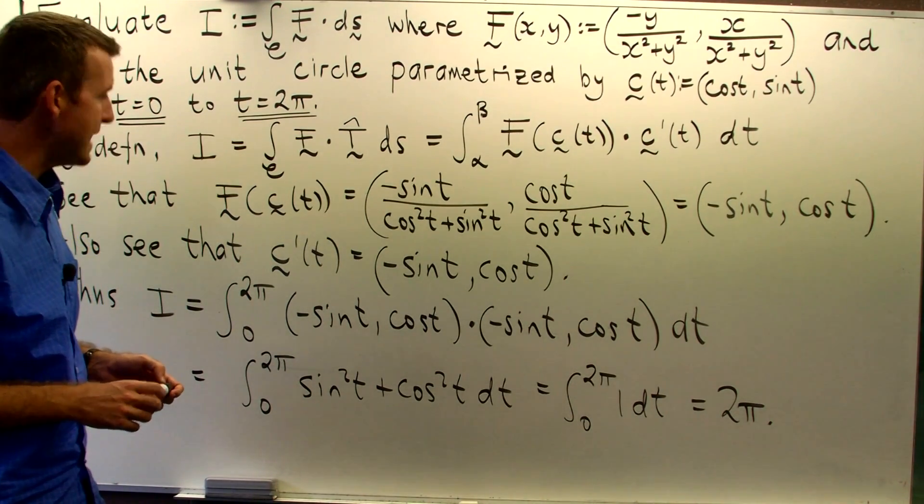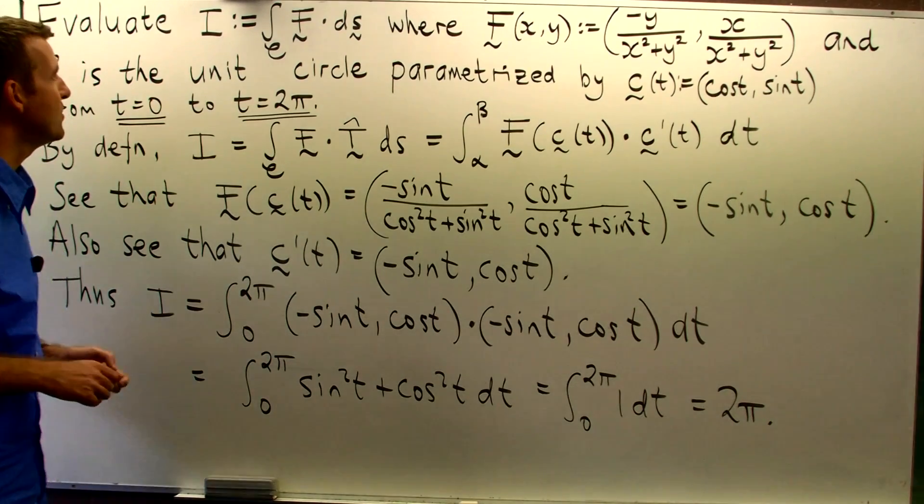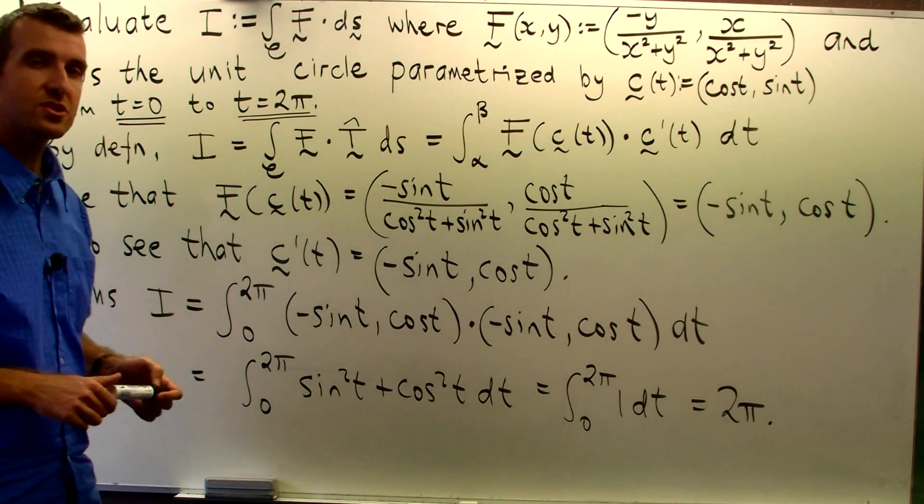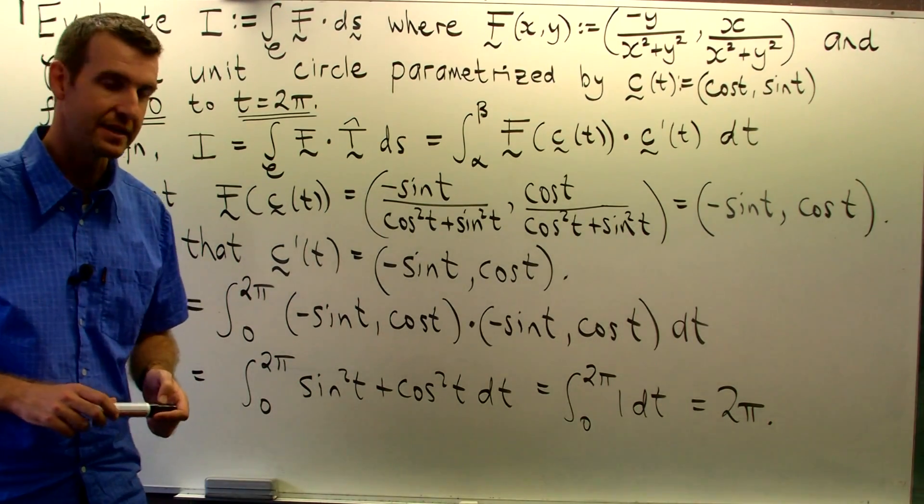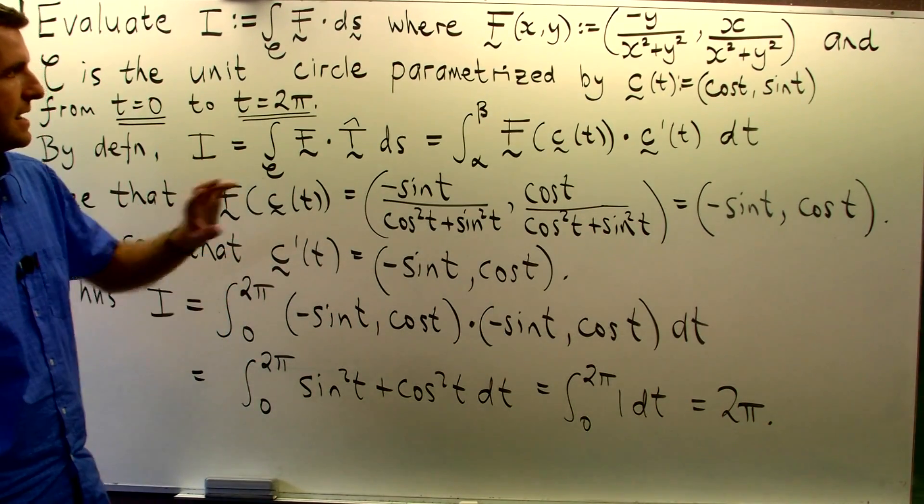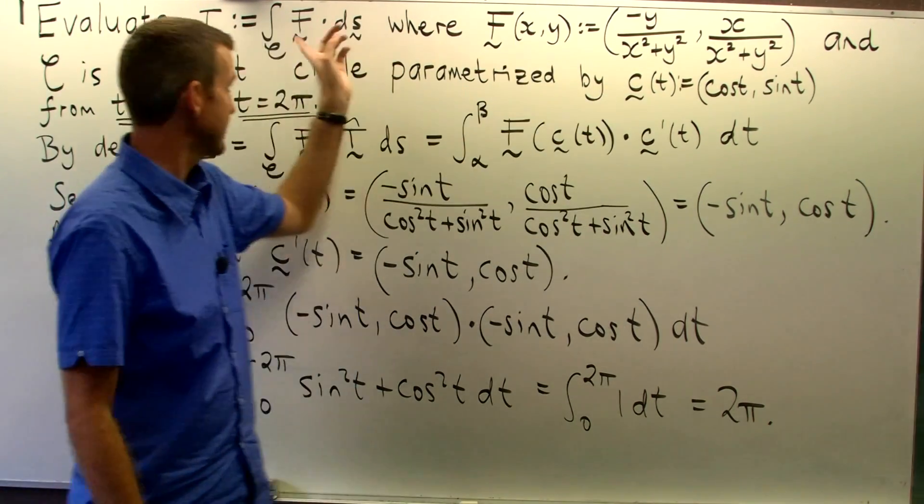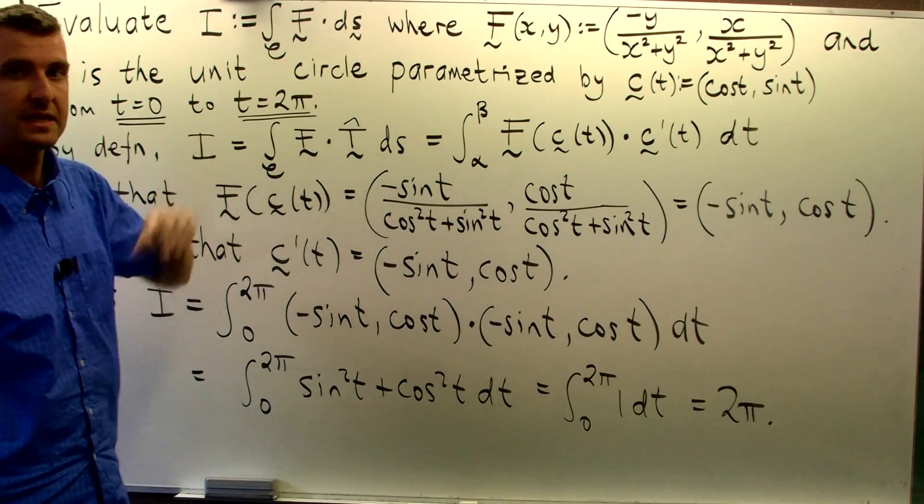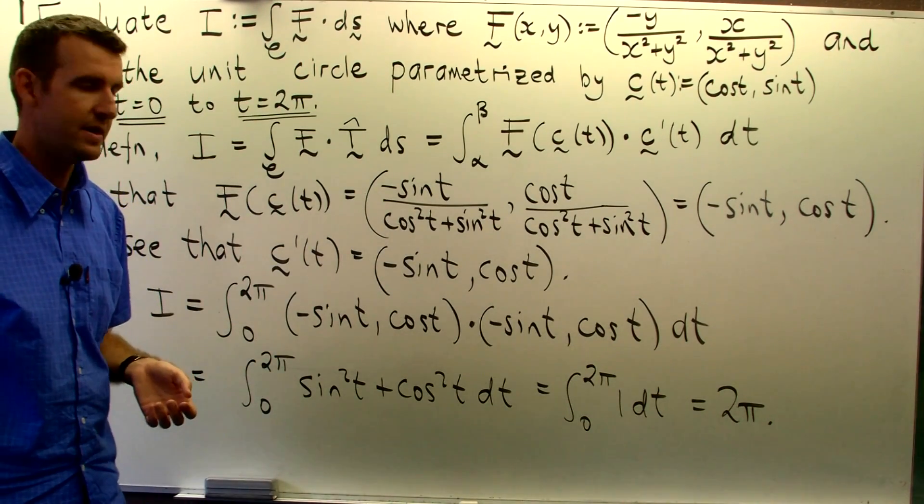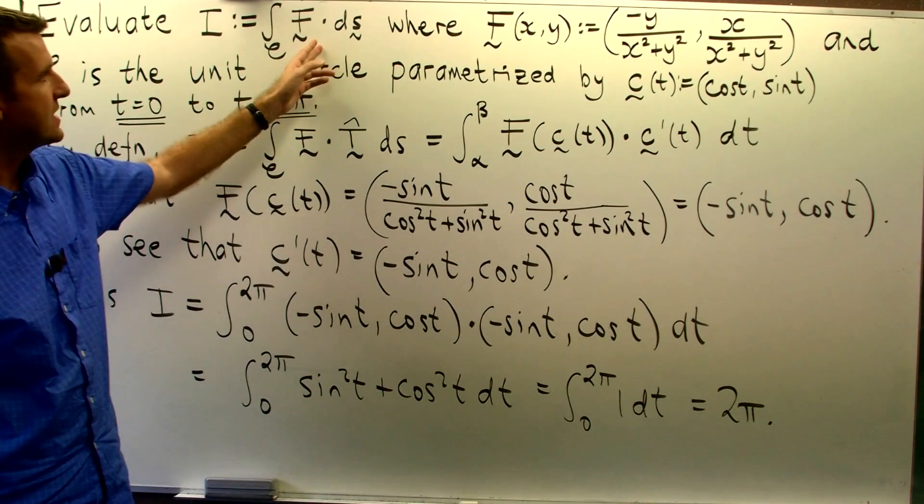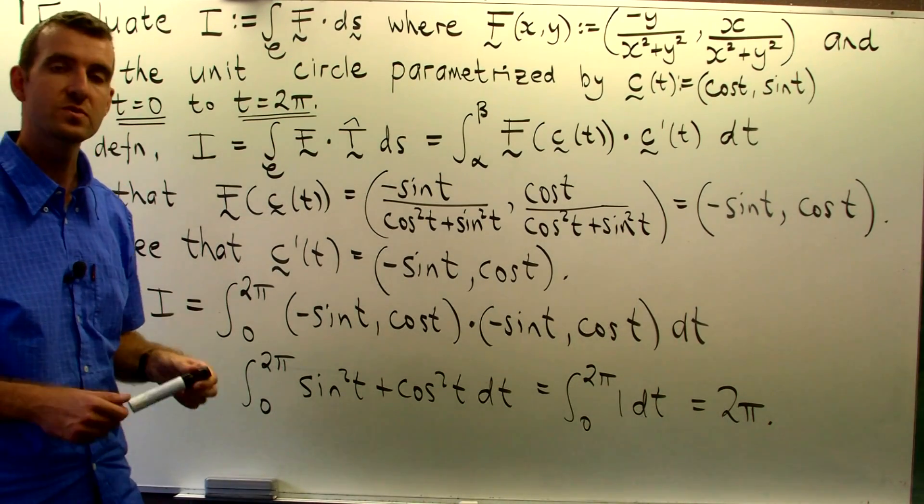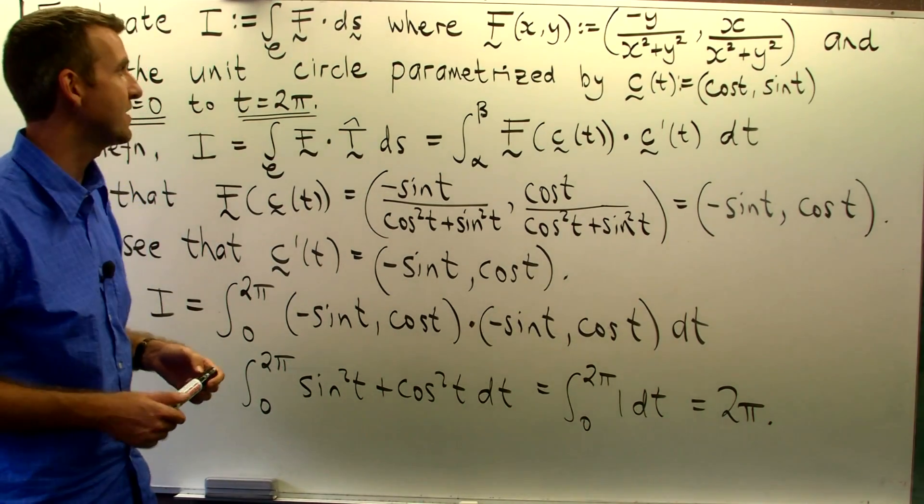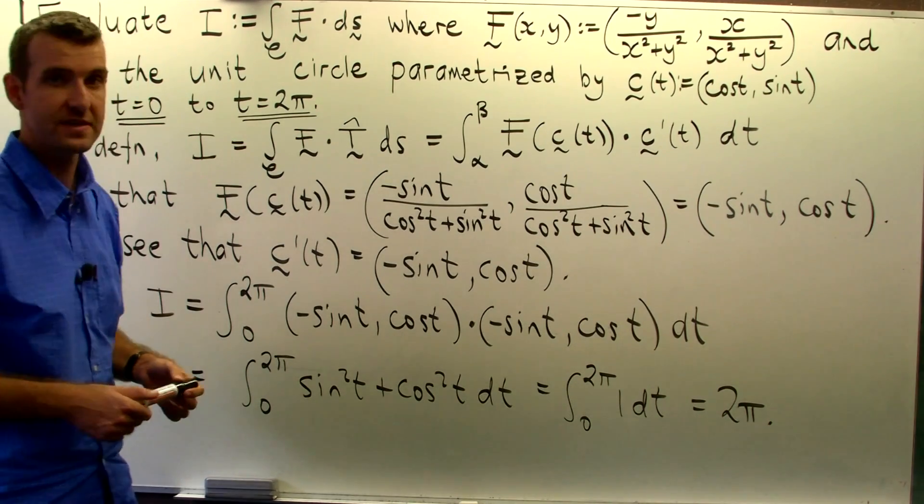Another application involves the so-called circulation. This particular parameterization, the curve, curly C, is a closed curve. It's just a circle. And this particular line integral measures the so-called circulation of f around curly C.